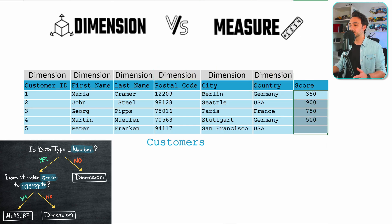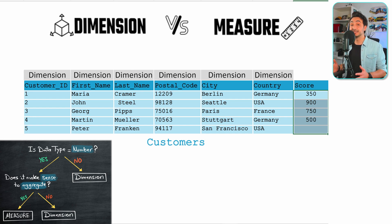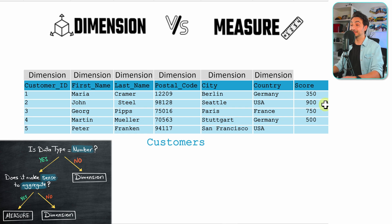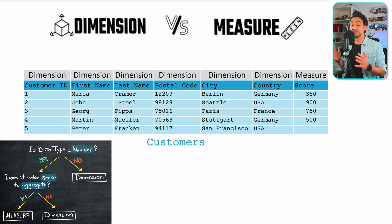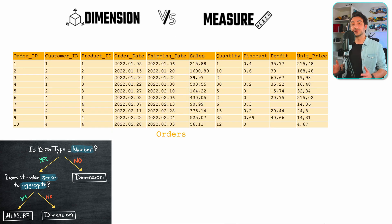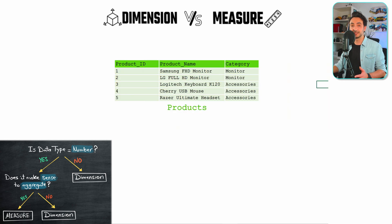The last field is score — again a number. Does it make sense to do aggregations? Yes, it really makes sense to find the average score. So we map it to a measure. In the Customers table we have six dimensions and only one measure. Now you can pause the video and practice with the Orders and Products tables.